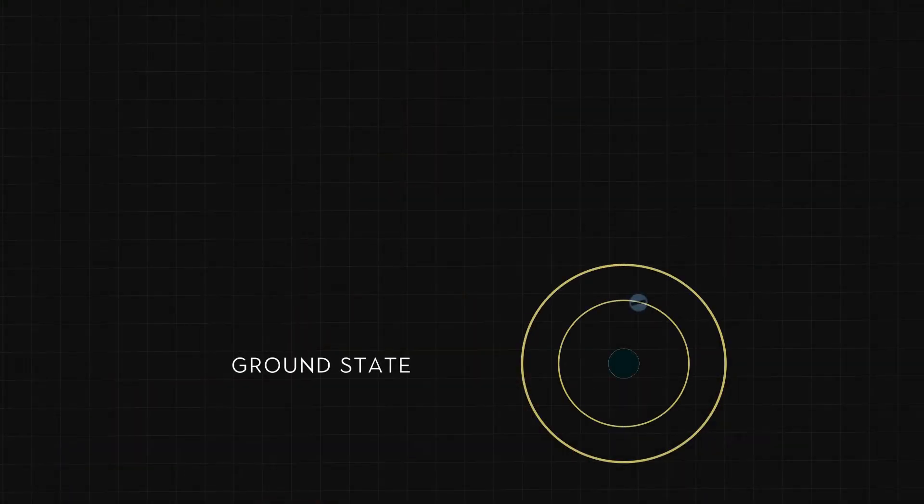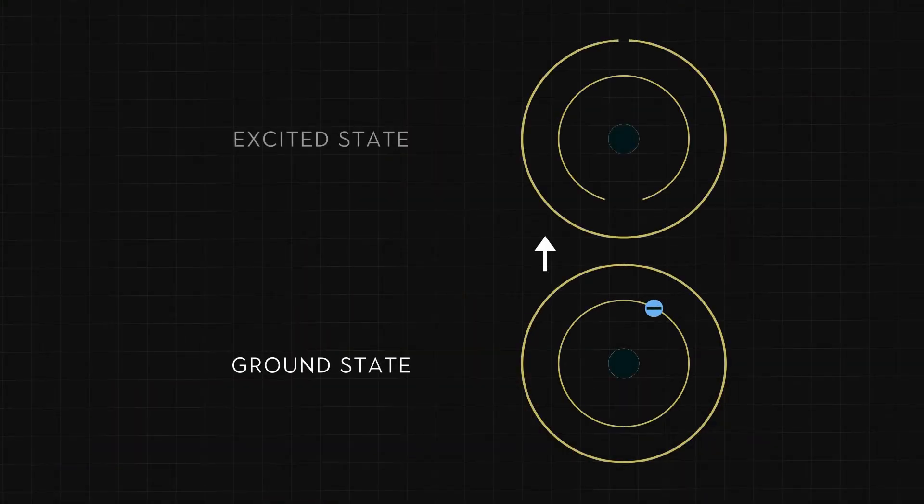When an atom absorbs light, the electrons in the atom get excited to a higher energy level. They jump like a kid that has eaten too much sugar. I know this because I have a toddler, and as fun as it sounds, you don't want to meet them after a sugar crash.